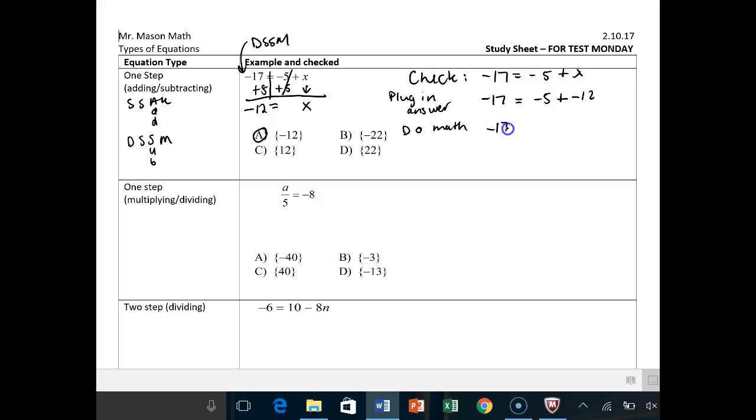So plug in answer. And that's in the second step. So we have negative 17 is equal to negative 5 plus negative 12. Now do math. And that's negative 17 is equal to, is negative 5 plus negative 12, negative 17? Yes, it is. Because this is an SSAK, same signs, add, keep. All right? Good.